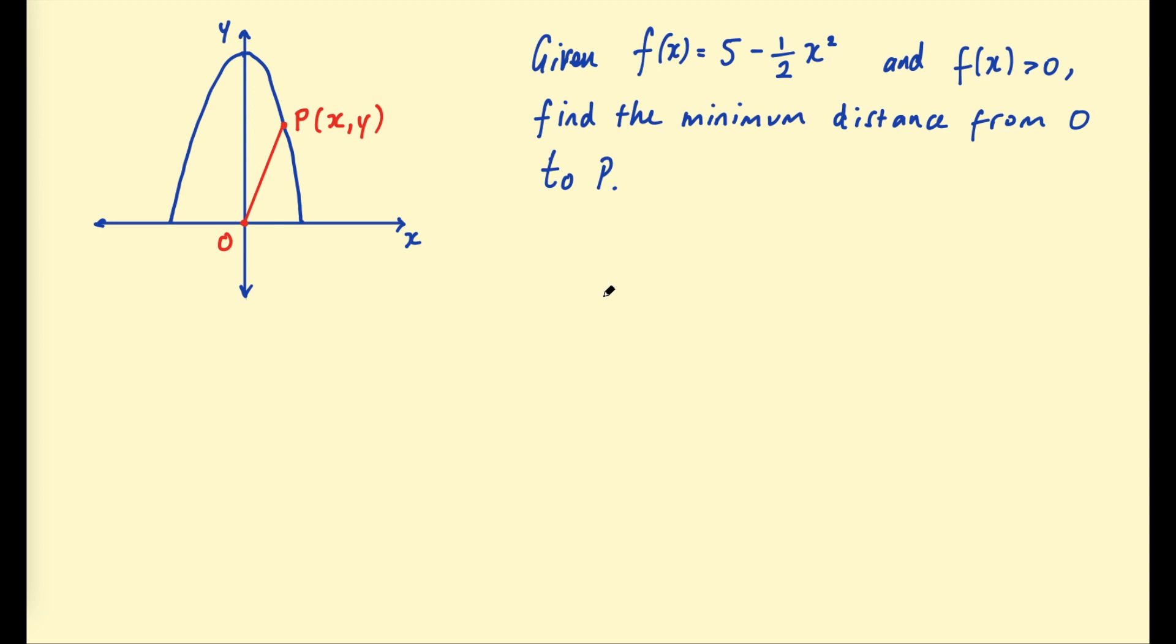Here is an interesting problem you can solve using the skills we've developed in this playlist so far. We're given a curve here, f of x, and it says given f of x equals 5 minus half x squared and f of x is greater than 0, find the minimum distance from O to P.